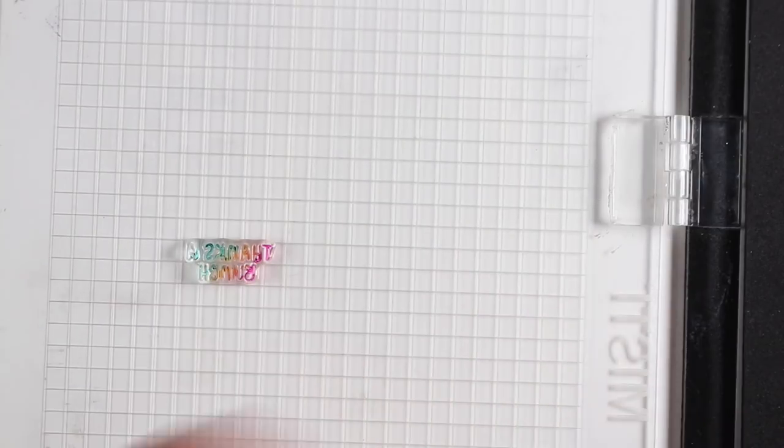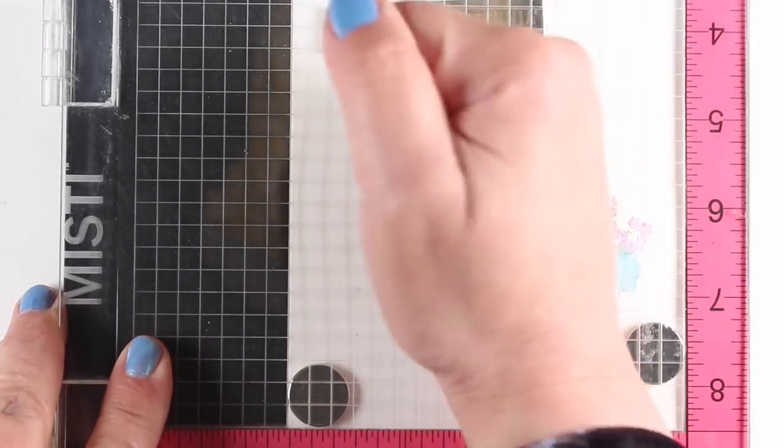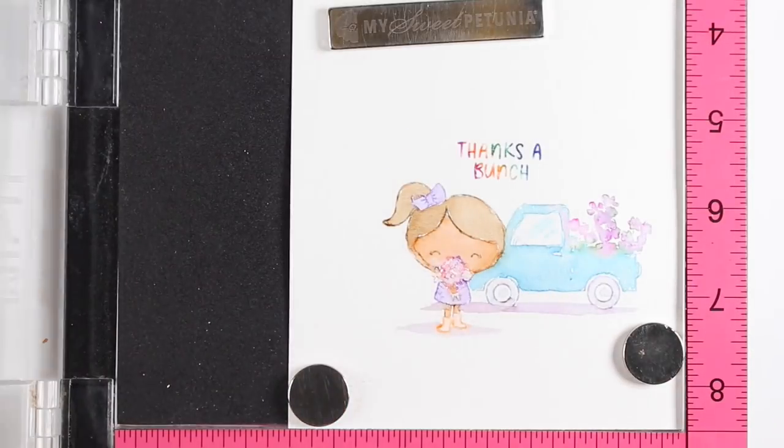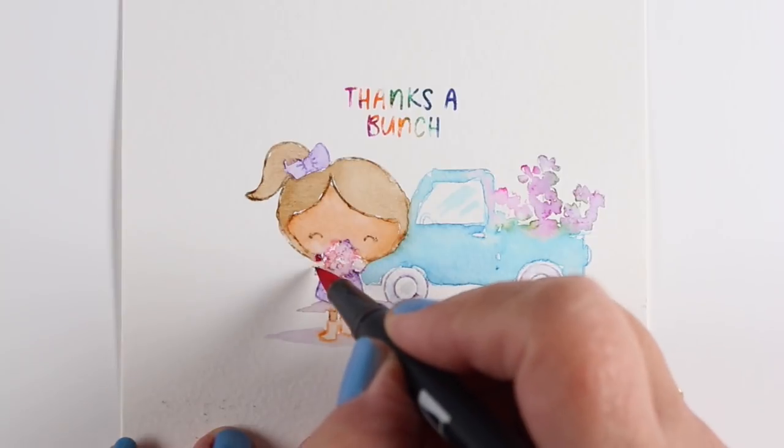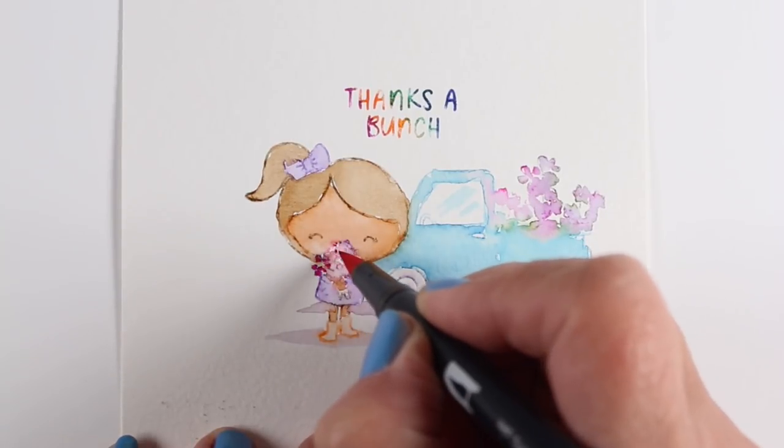And then it's going to look like I used a rainbow pad without having to have one because you wouldn't even be able to find a rainbow pad with such a tiny distance between it because this is a really itty-bitty sentiment. But I can create that beautiful rainbow. You can also just highlight a particular word that way really easily by using markers.